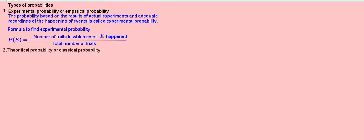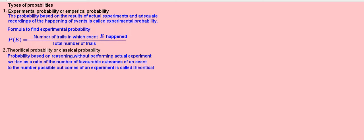Next, theoretical probability, or classical probability. Probability based on reasoning without performing actual experiment, written as a ratio of the number of favorable outcomes of an event to the number of possible outcomes of an experiment, is called theoretical probability. Here we do not conduct actual experiment. This type of probability is based on logical reasoning.